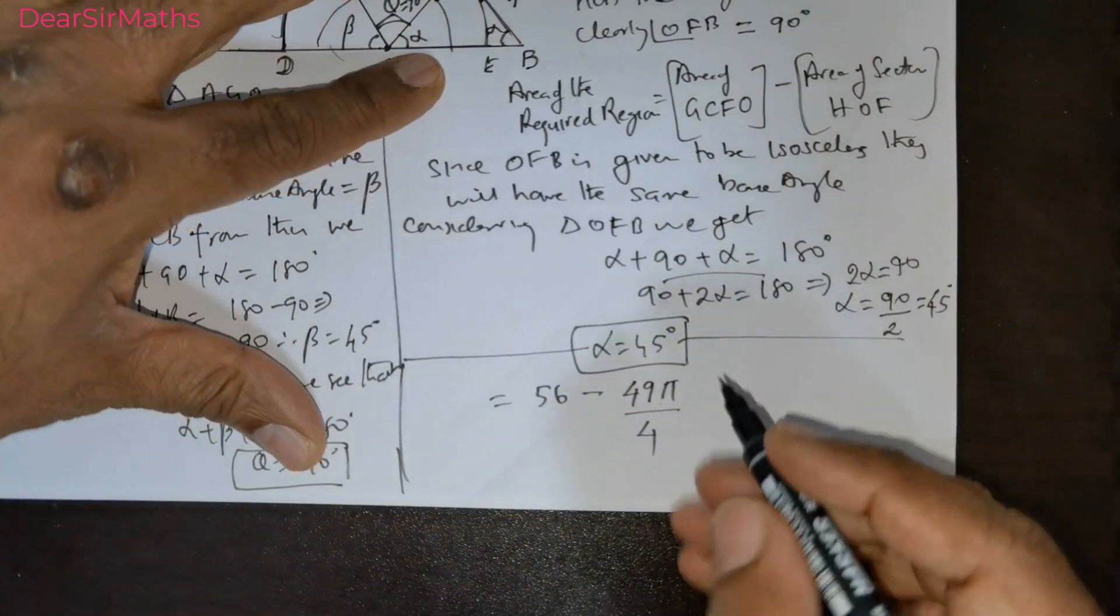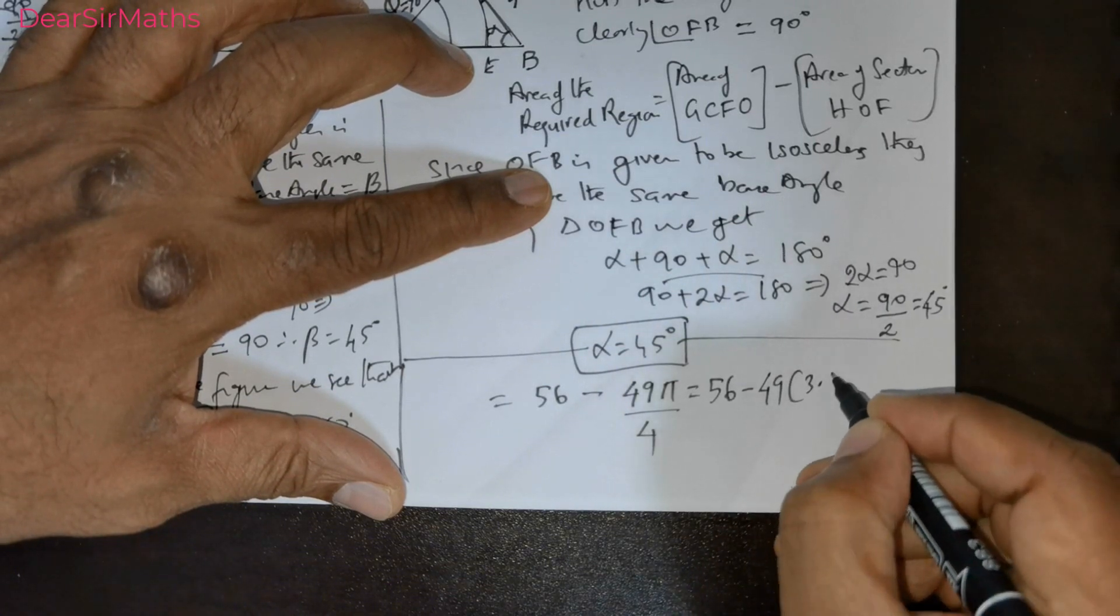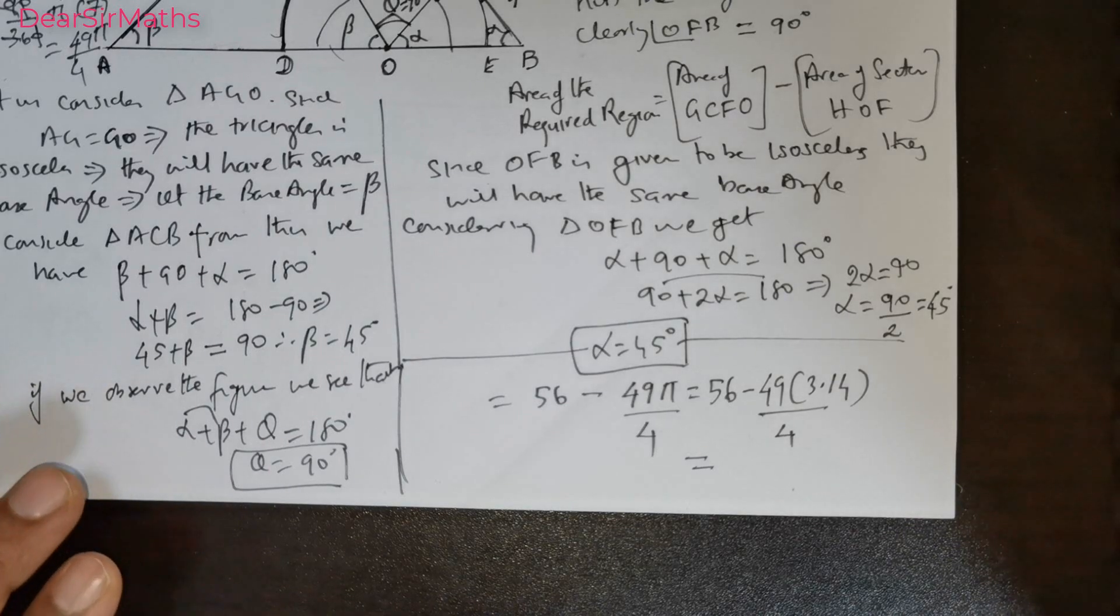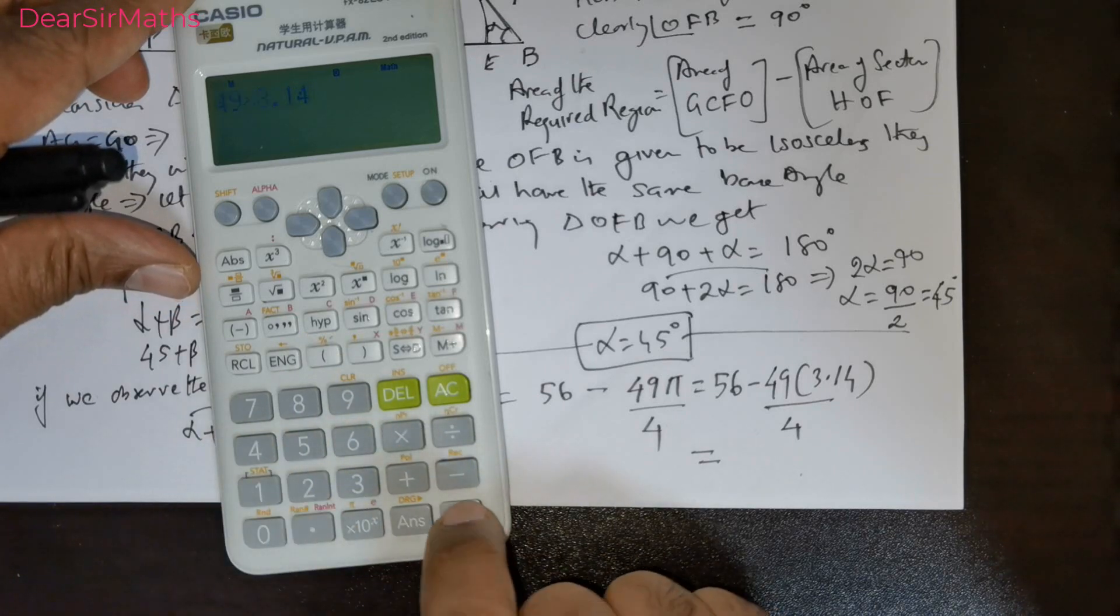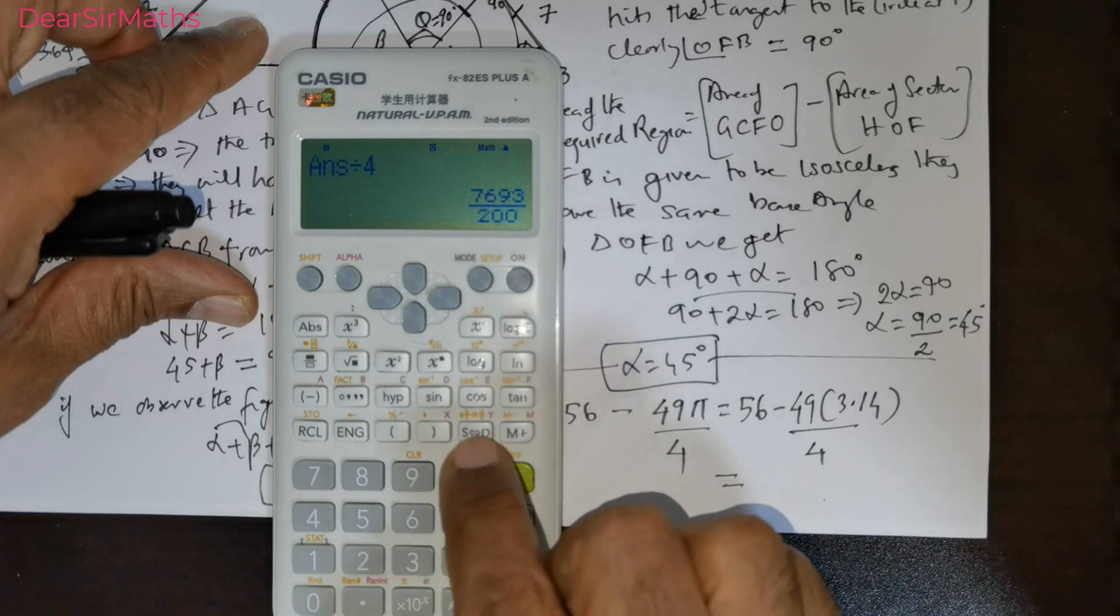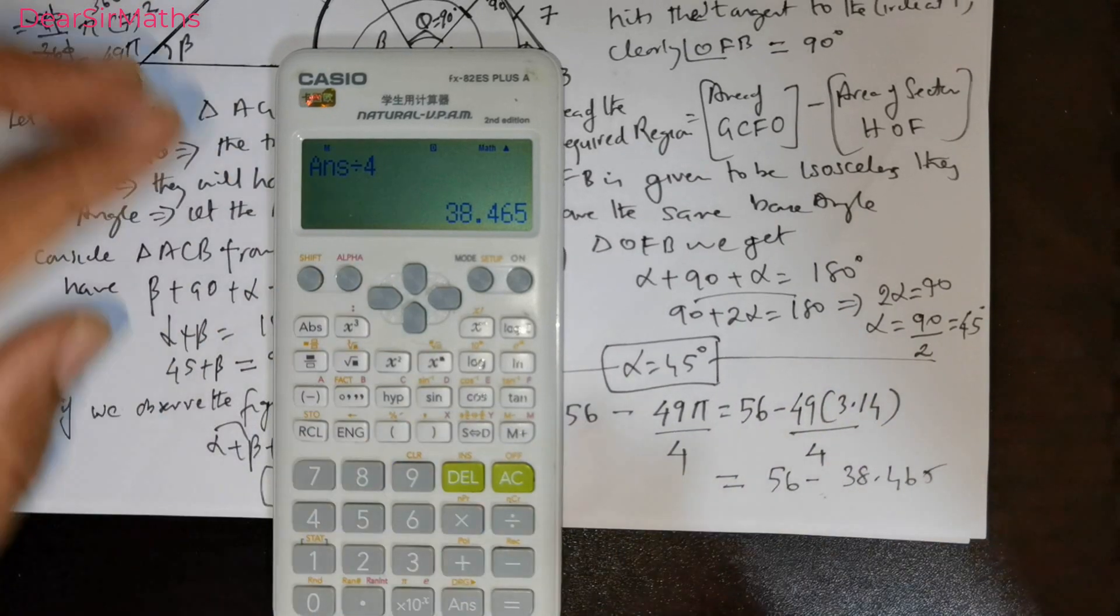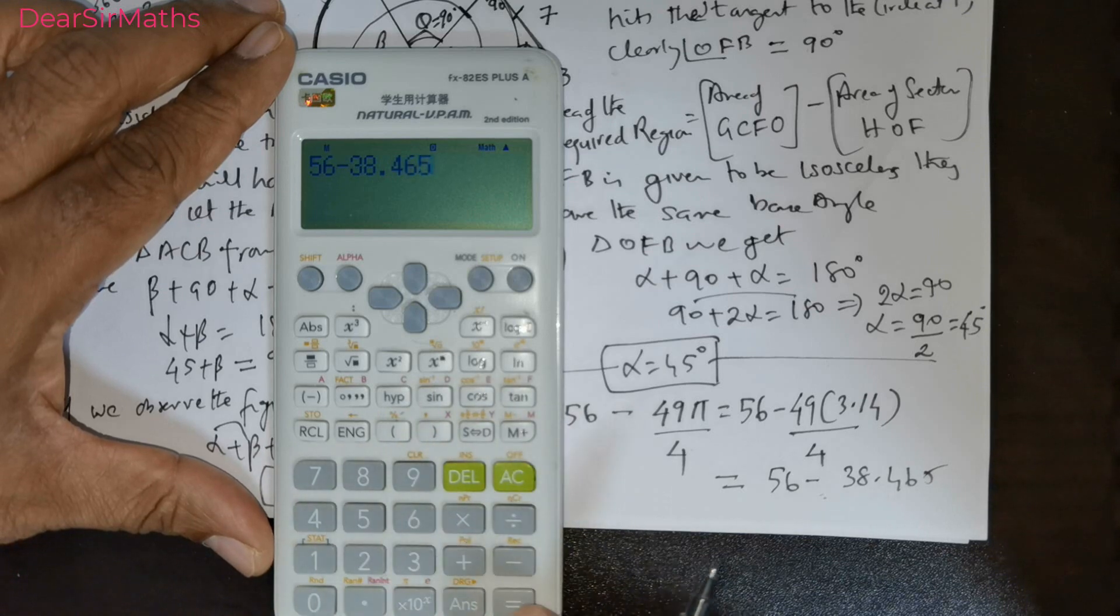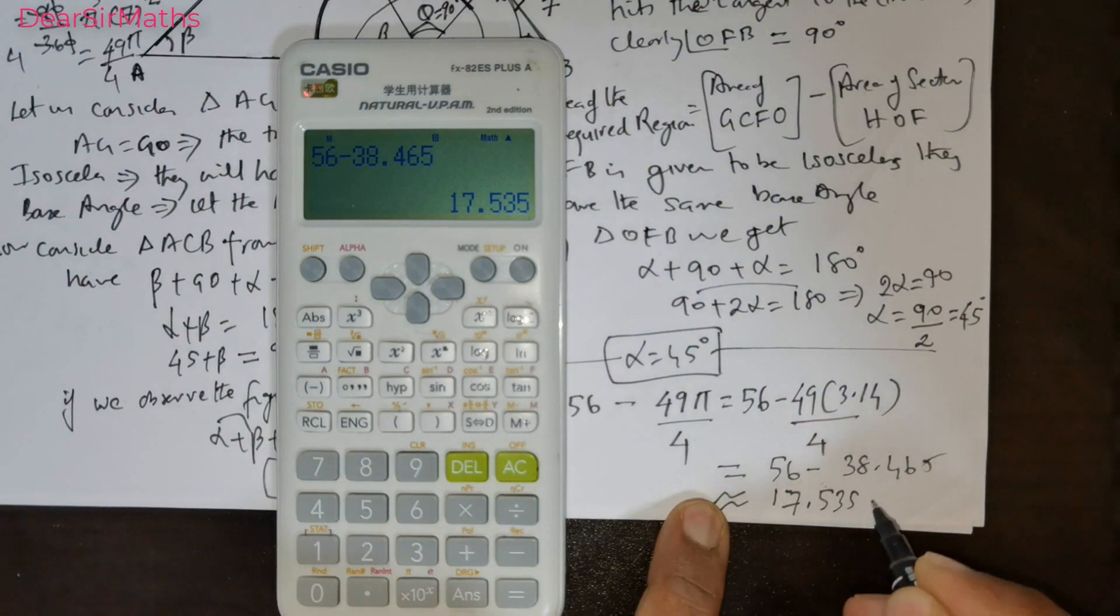If you want, you can use your calculator and find out: 56 minus 49 times 3.14 divided by 4. I will get my calculator. 49 multiplied by 3.14, you get 153.86. That has to be divided by 4, so you get 56 minus 38.465. The area of the shaded region is 17.535 square units.